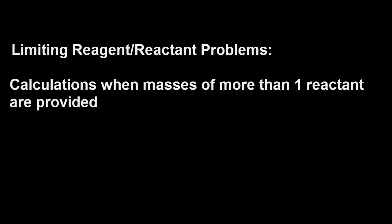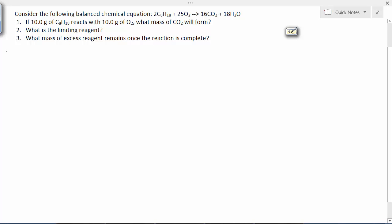How do we handle a calculation when more than one mass is provided? Up until this point, any mass-mass problem we've looked at, we've only given you a quantity of one of the reagents. These are called limiting reagent problems.